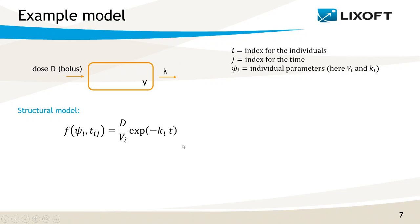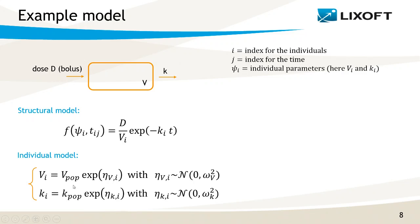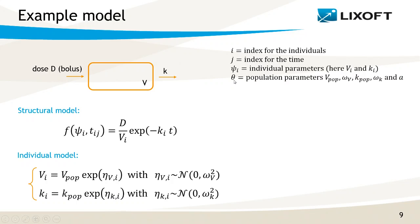For the statistical part, I need to define the distribution of the individual parameters within the population. I can, for instance, assume that Vi and Ki follow a log-normal distribution, with eta — the random effects — following a normal distribution with mean 0 and standard deviation Omega K. Vpop, Kpop, Omega V, and Omega K represent the population parameters that characterize the population. Altogether, I will call them theta.